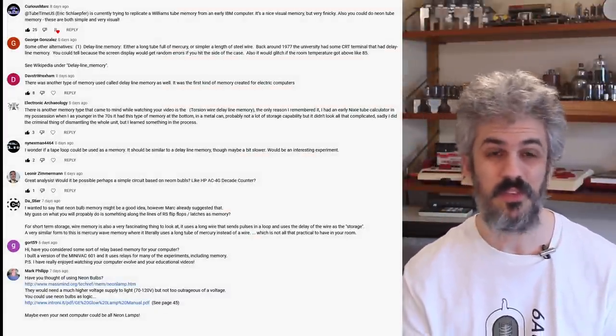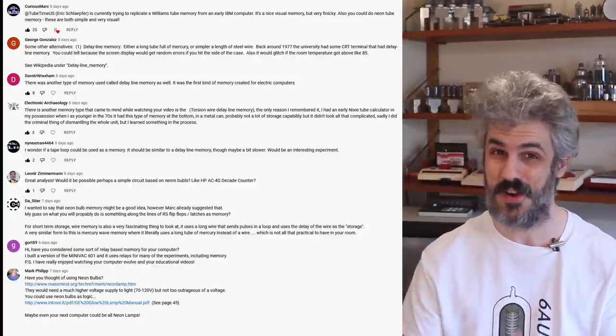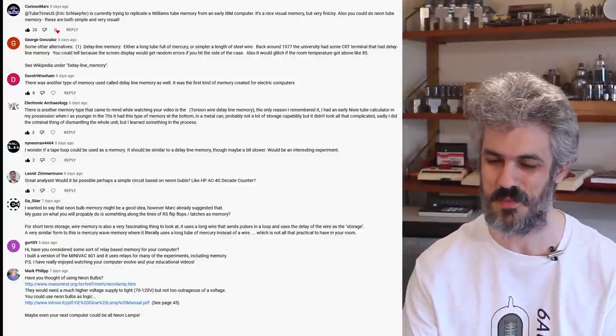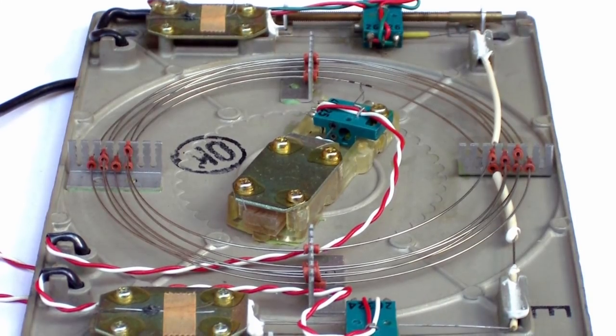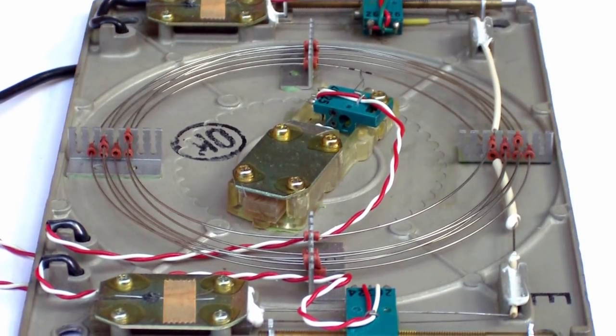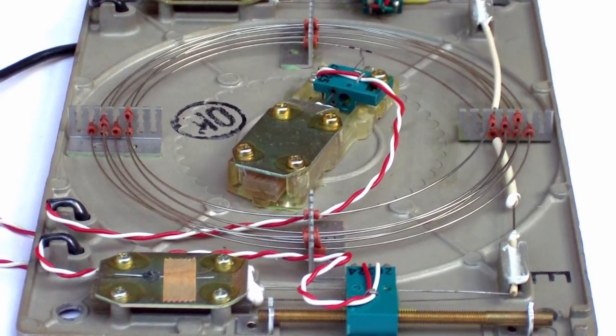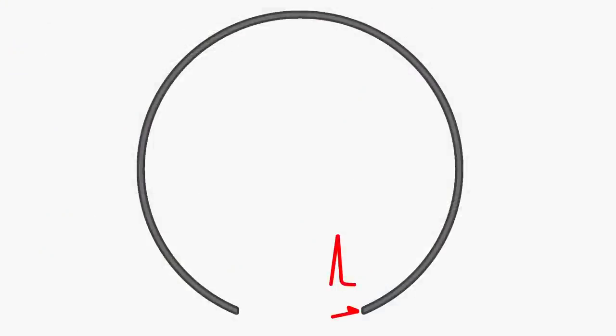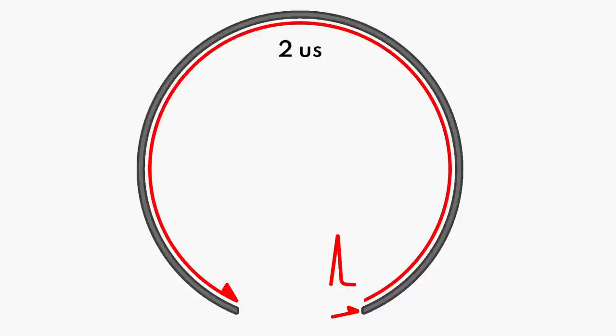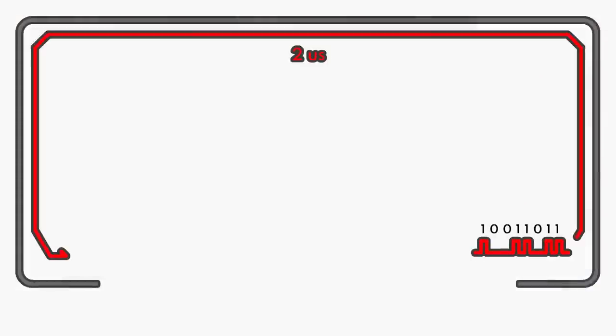Delay line memory is very cool. As I understand it, it's essentially just a giant loop of wire that takes a certain amount of time for a pulse to travel down. If I put an electrical pulse on this end of the wire, it takes two microseconds for that pulse to make it to the other side. I can put a train of pulses into one side and know exactly how long it's going to take for that same train to come out the other side.